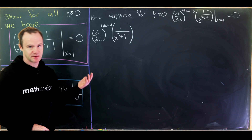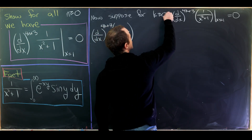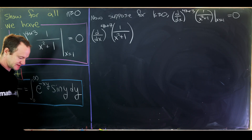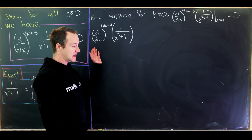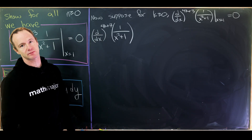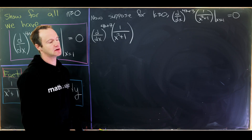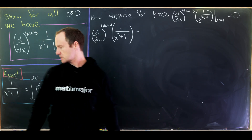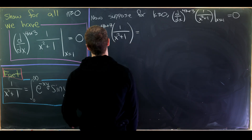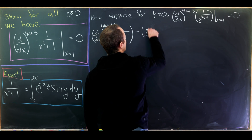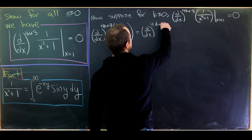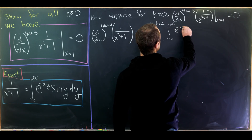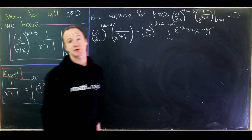Now let's do the induction step. Suppose that for some k ≥ 0, the (4k+3)th derivative of 1/(x²+1) evaluated at x=1 is zero. We want to show the (4k+7)th derivative also equals zero at x=1 — note 4k+7 = 4(k+1)+3, so it's the same form. We rewrite using the integral representation: it equals the (4k+7)th derivative of the integral from 0 to infinity of e^(-xy) sin(y) dy.